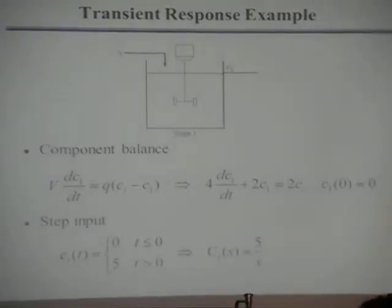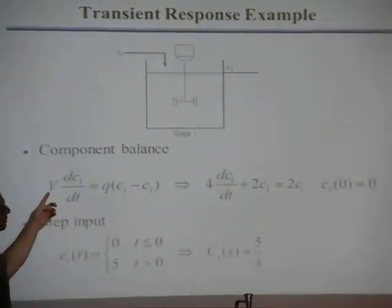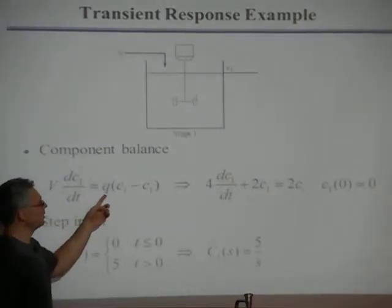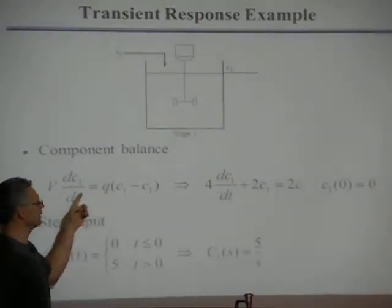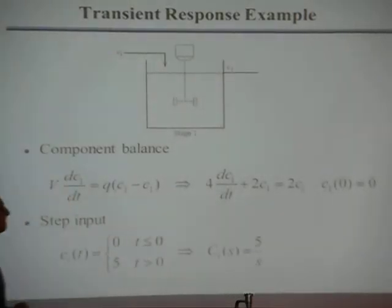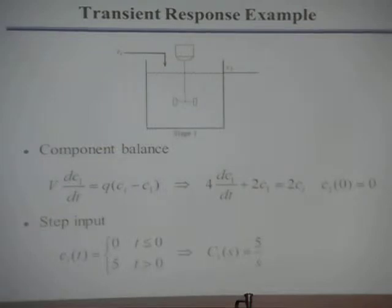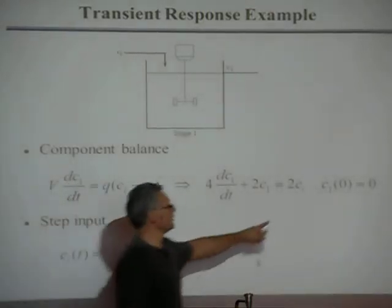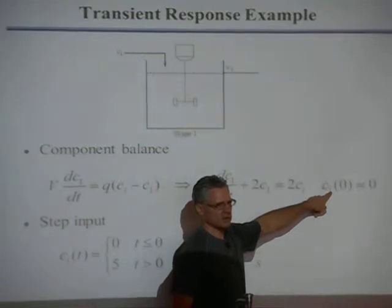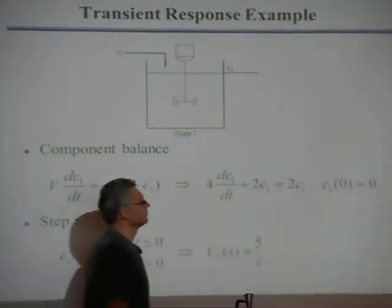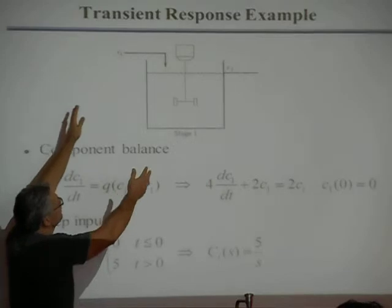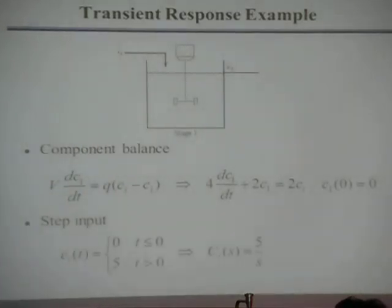There's our differential equation. I'm specifying value of V to be 4, value of Q to be 2. That's why I took that and rewrote it like that. So there's the differential equation. CI is the input, C1 is the output of interest. I want to solve this differential equation. The initial condition is there's none of this component in the reactor, the concentration is zero.